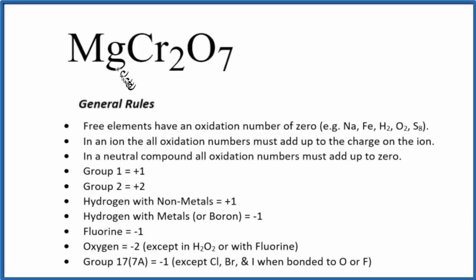To find the oxidation numbers for each element here in MgCr2O7, magnesium dichromate, we'll use these rules to guide us.